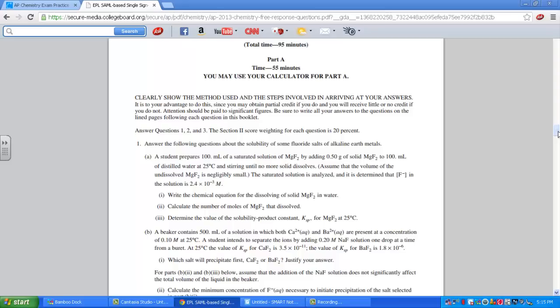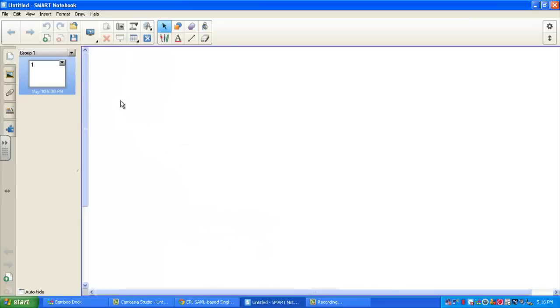Let's take a peek through all questions. Part i: Write the chemical equation for the dissolving of the solid. Part ii: Calculate the number of moles of the solid that dissolved. Part iii: Determine the value for the Ksp, the solubility product constant of magnesium fluoride at 25 Celsius. Let me pull up my work page.